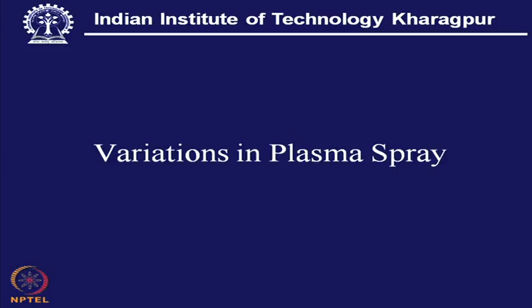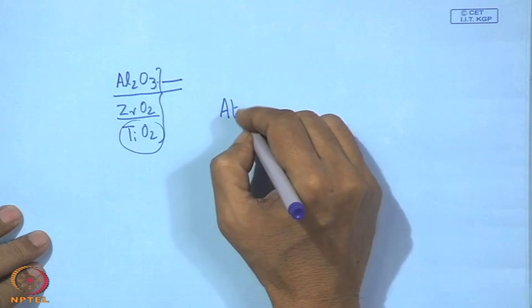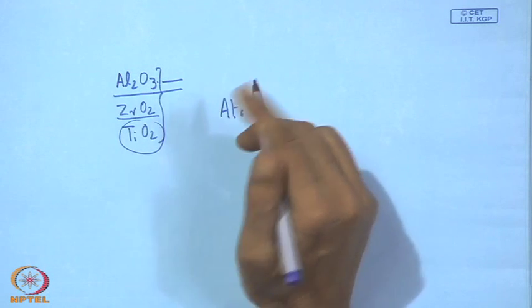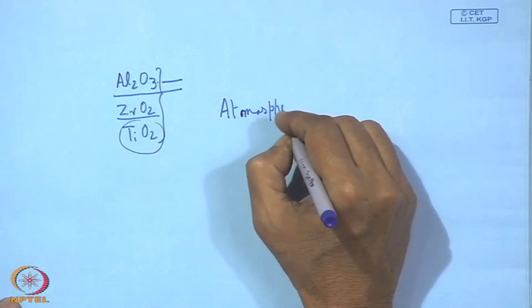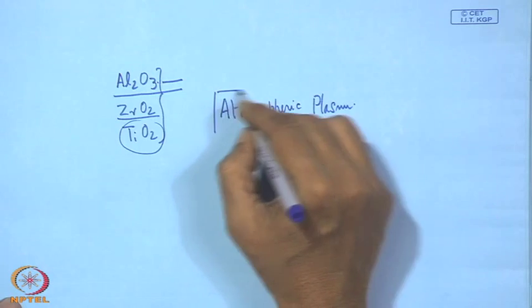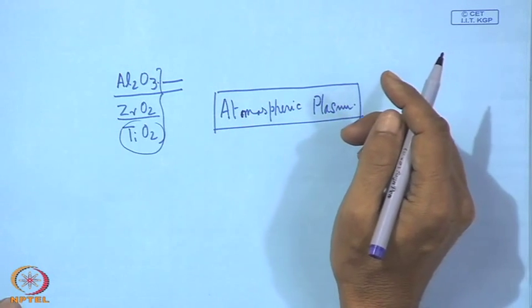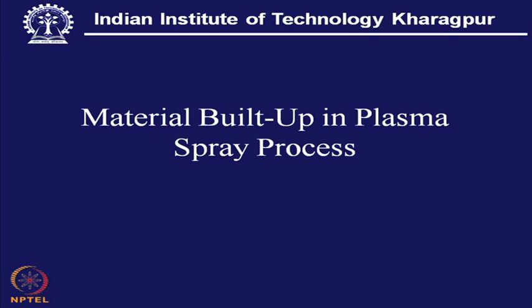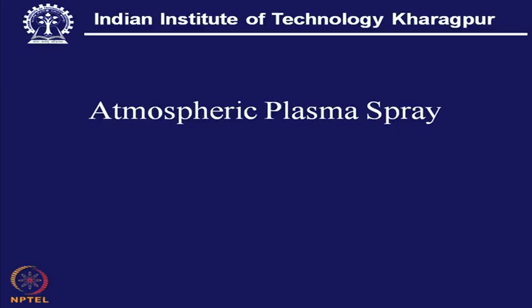The application area will be those places where we require extreme heat shielding and also wear resistance. We have some variation in plasma spray. One variation is atmospheric plasma spray, which is plasma carried out in open atmosphere.